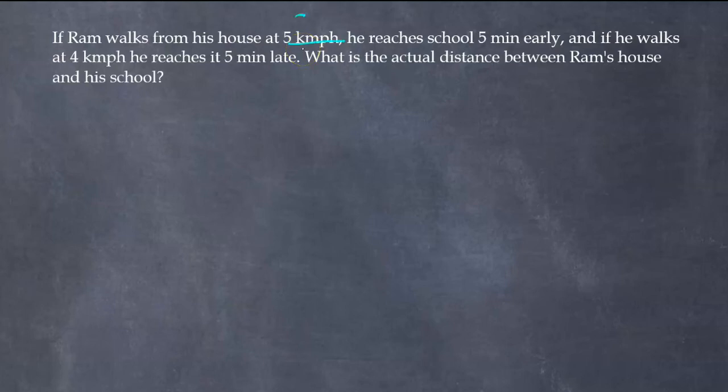So what is the actual distance between Ram's house and his school? The data we have here is 5 kilometer per hour which is S1, he reaches school 5 minutes early which is minus 5, and if he walks at 4 kilometer which is S2, he reaches 5 minutes late which is plus 5.